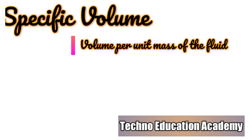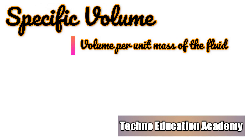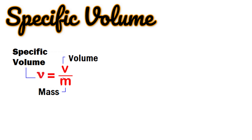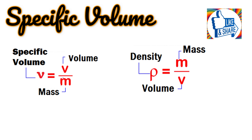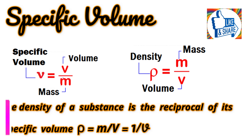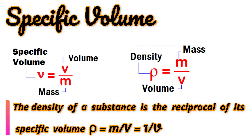Specific volume is the volume per unit mass of the fluid. Its unit is meter cube per kg, and it is commonly applied to gases. Specific volume v = V/m. The density of a substance is the reciprocal of its specific volume, so rho = m/V, or density equals 1 upon specific volume. Density and specific volume are reciprocal terms.